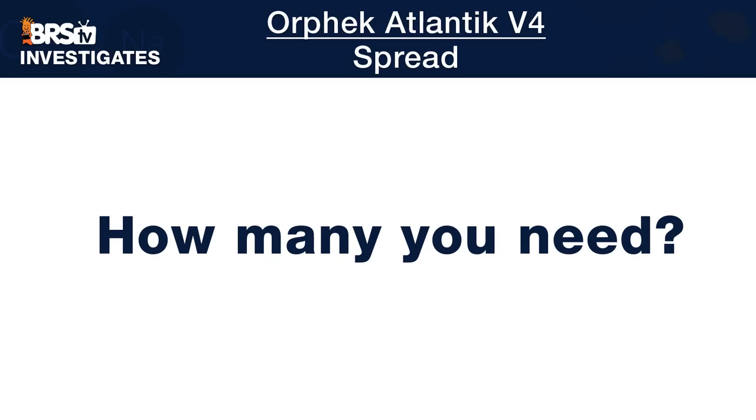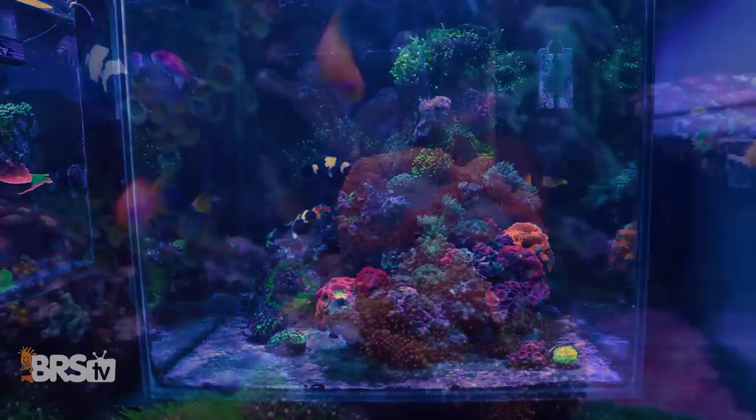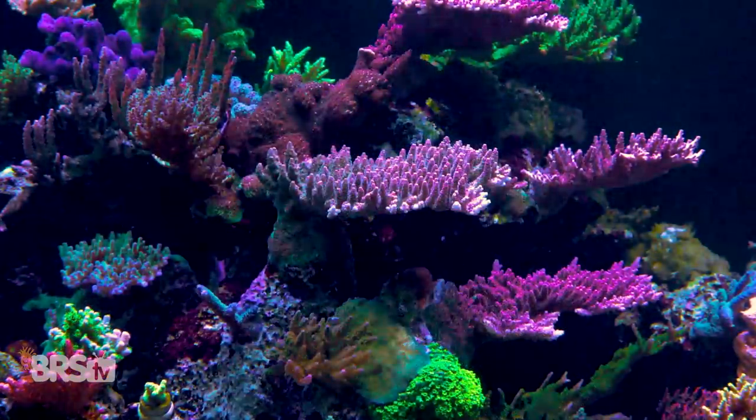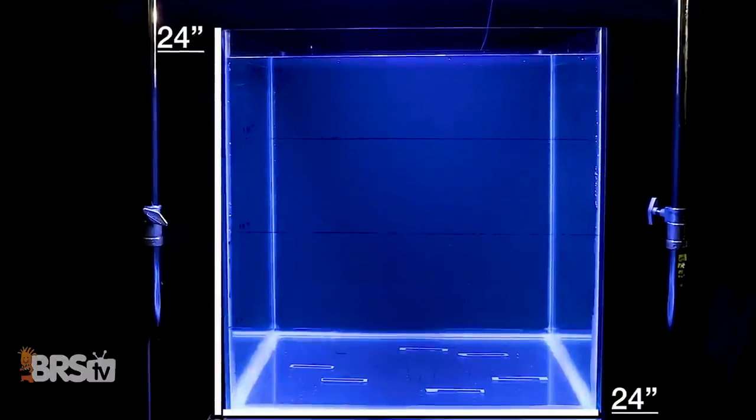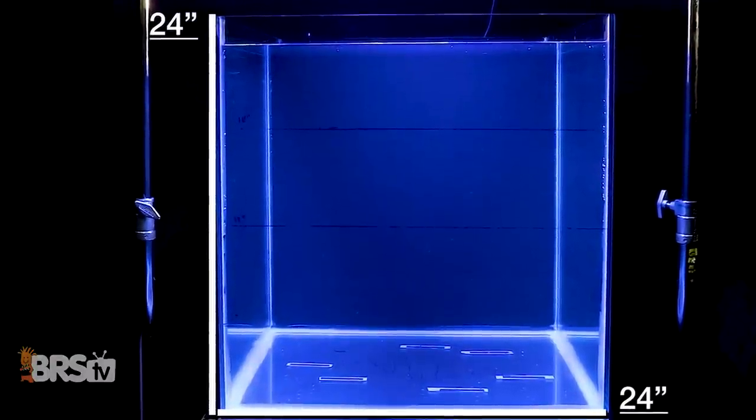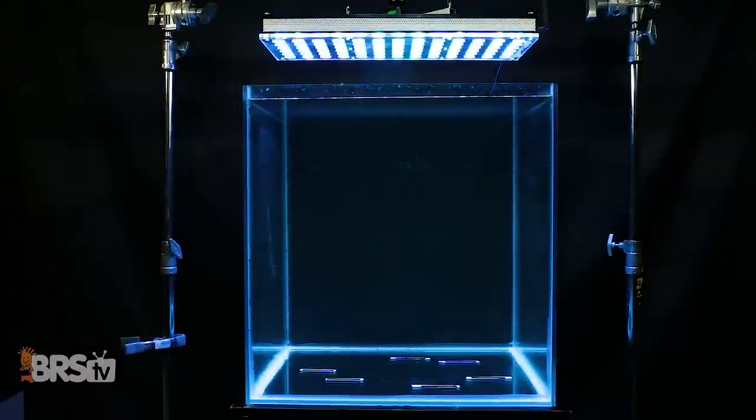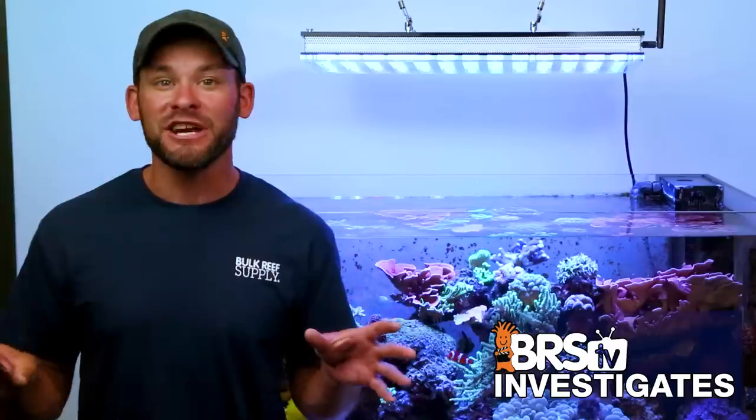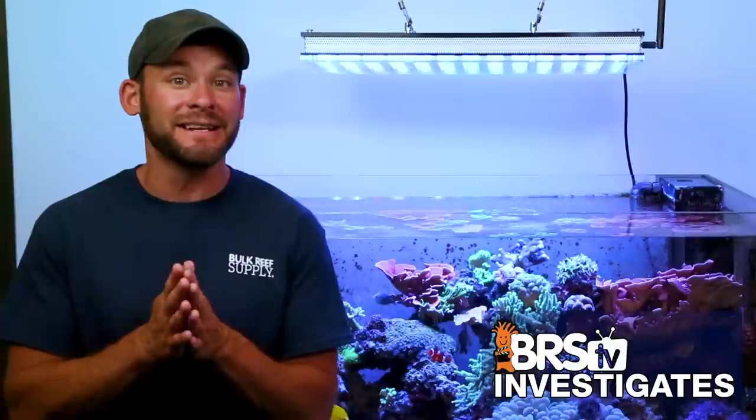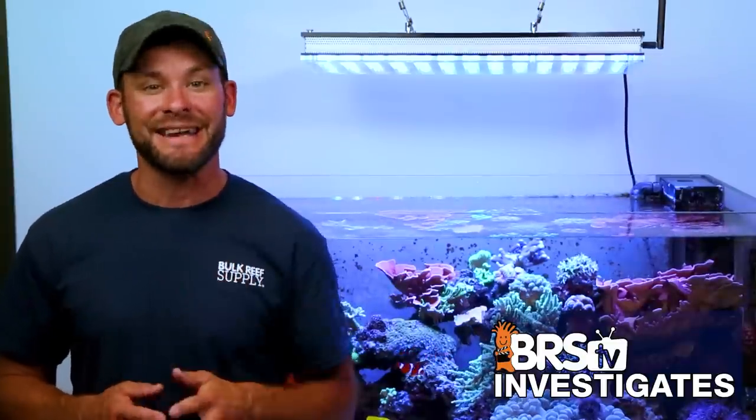Let's hit that first component of spread and how many Atlantic V4 panels we recommend for both lower light demand tanks like LPS and softies or higher PAR demand tanks full of branching SPS, where our testing results show that over a 24 by 24 inch area, a single Orphic V4 is ample enough to support both tank types by simply changing the overall intensity of the recommended LED channel settings that we're going to share a bit later.